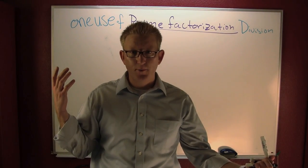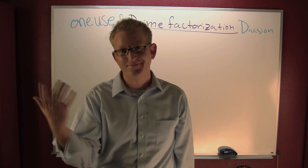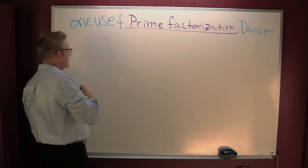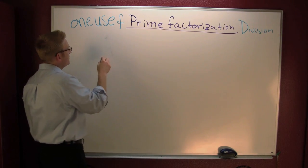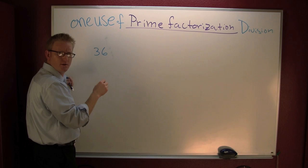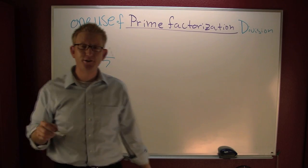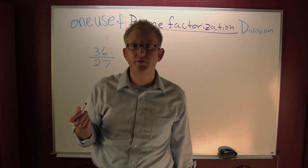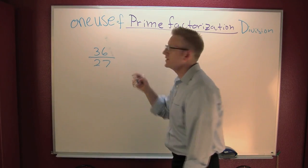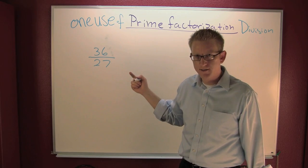So that was swell. We just got done talking about prime factorization. One use of prime factorization is division — or simplification of fractions. For example, 36 divided by 27. What we want to do is simplify that fraction, and we're going to use prime factorization to do it.